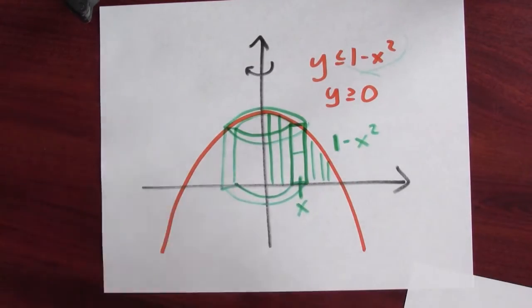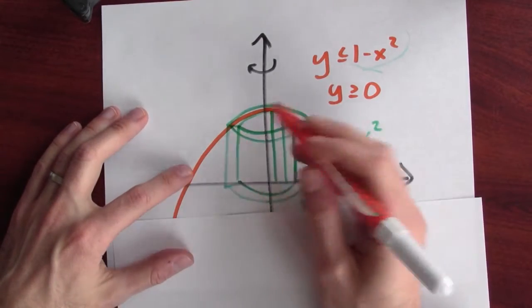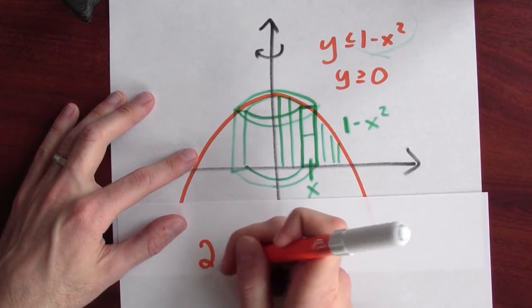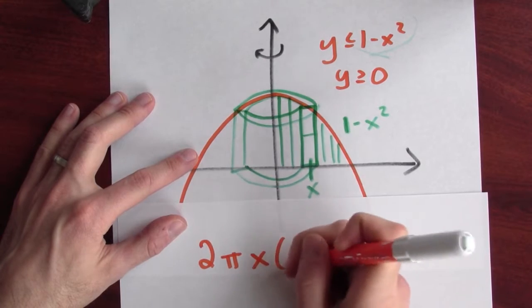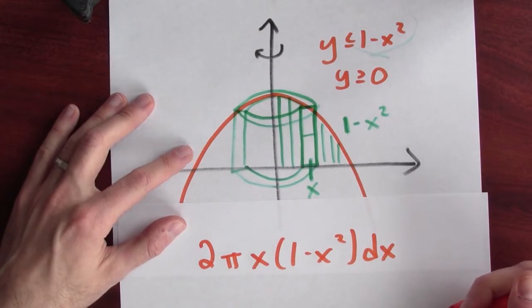So I have put all those pieces together. I can write down the volume of just that one shell. And it'll be 2π, the radius of that shell, the height of that shell, the thickness of that shell.